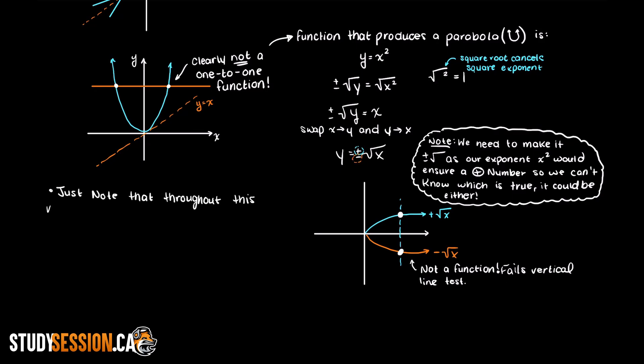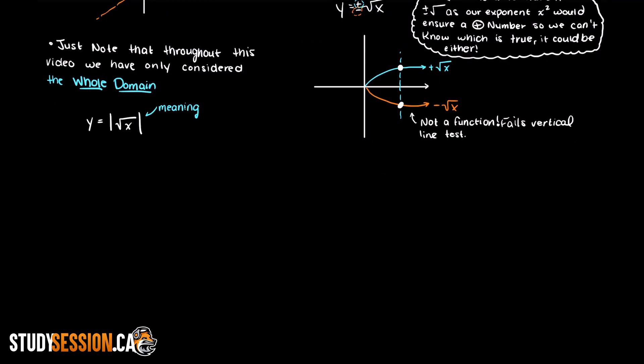One last thing I want to add here is that all of these things that we have been talking about are considered over the whole domain. So, for example, if I added some absolute brackets around my x squared term, well that means we can't have negative values, and therefore our function now looks like this graphically.